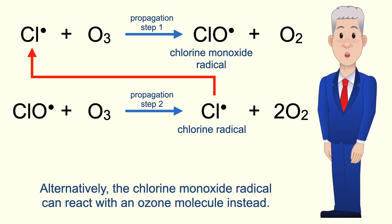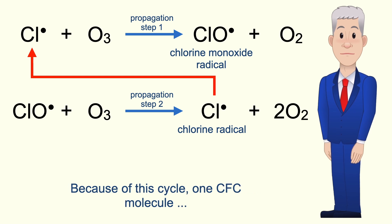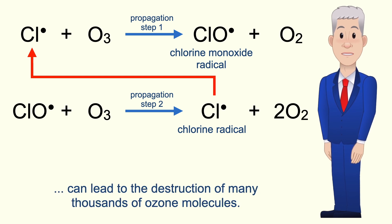Alternatively, the chlorine monoxide radical can react with an ozone molecule instead. But again a chlorine radical is produced and the cycle continues. Because of this cycle, one CFC molecule can lead to the destruction of many thousands of ozone molecules.